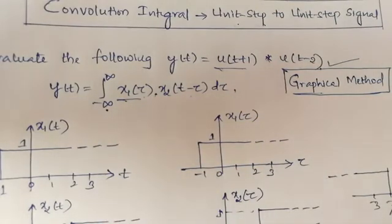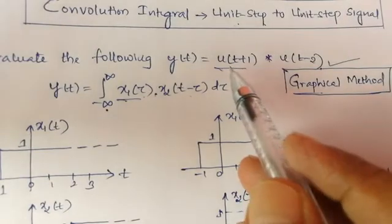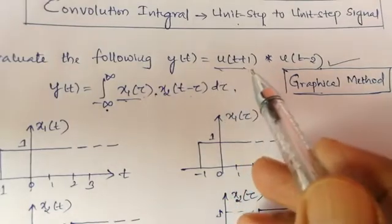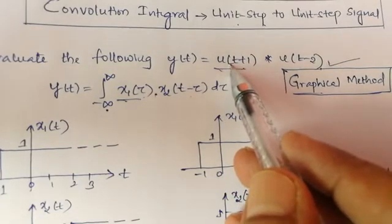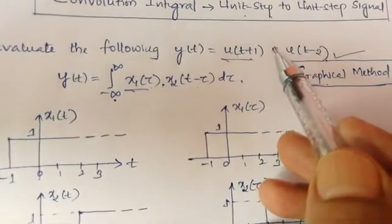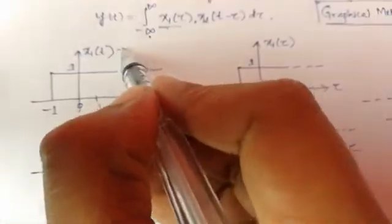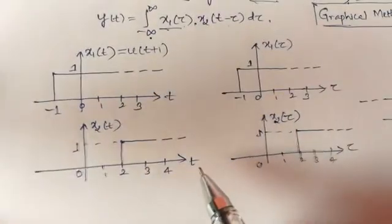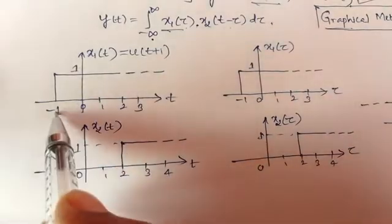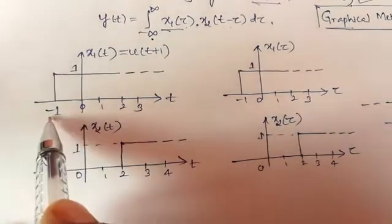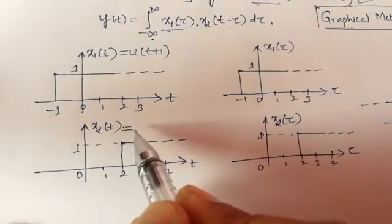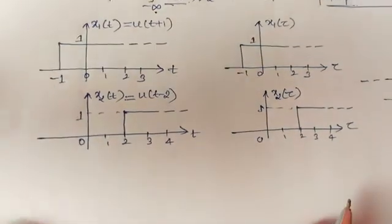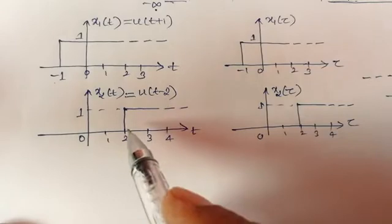First, I am going to sketch u(t+1), which is the unit step signal u(t) shifted toward the left side by one second — advanced by one second. This is x1, represented as u(t+1). Since the step signal is advanced by one second, it starts from t = −1. The second signal x2(t) = u(t−2) is a unit step signal delayed by 2 seconds, so it starts from t = 2 onwards.